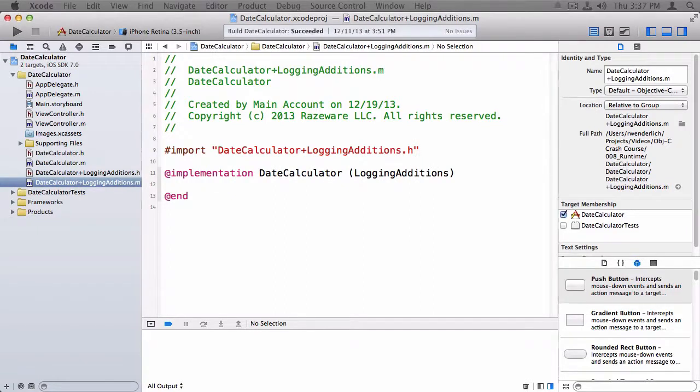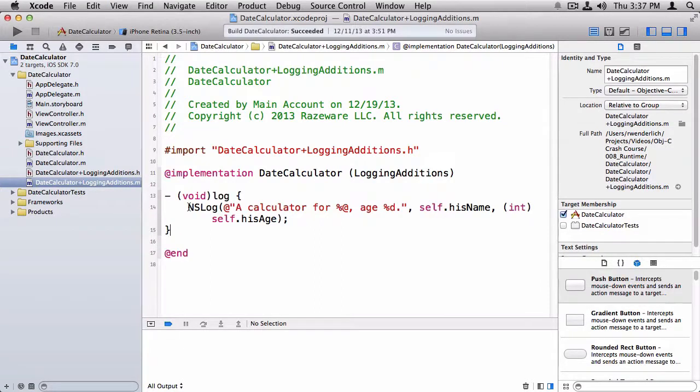And then we will go to the .m and implement it. And I've already written this code to save a little bit of time. I'll just paste it in. So it's very simple. It just logs out a little bit of information about this class. Now notice that I have to use the properties here because this category does not know about the instance variables because they're private to the .m file. But I can use the properties like you see here.